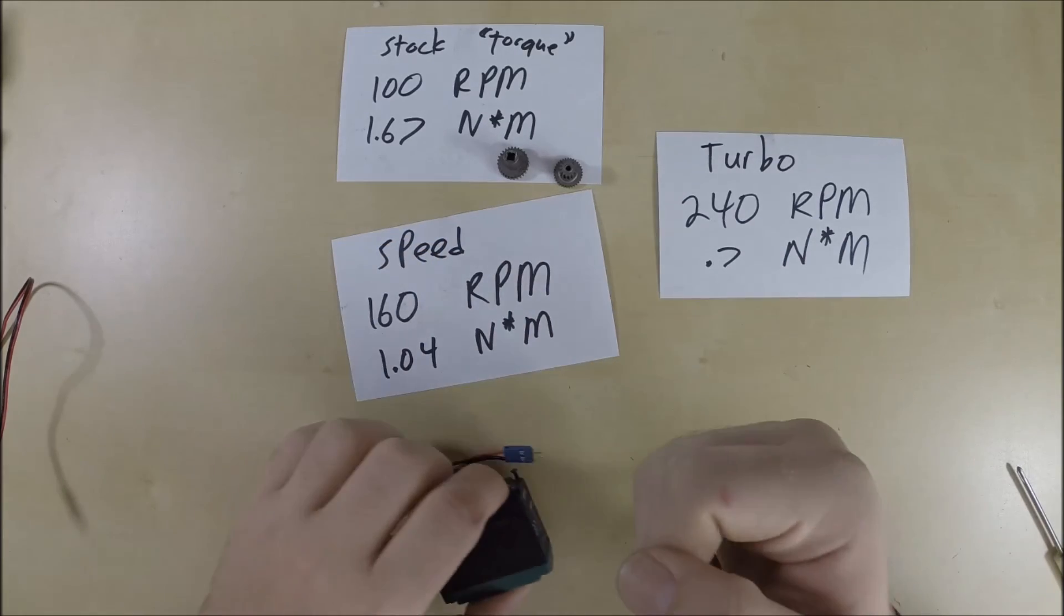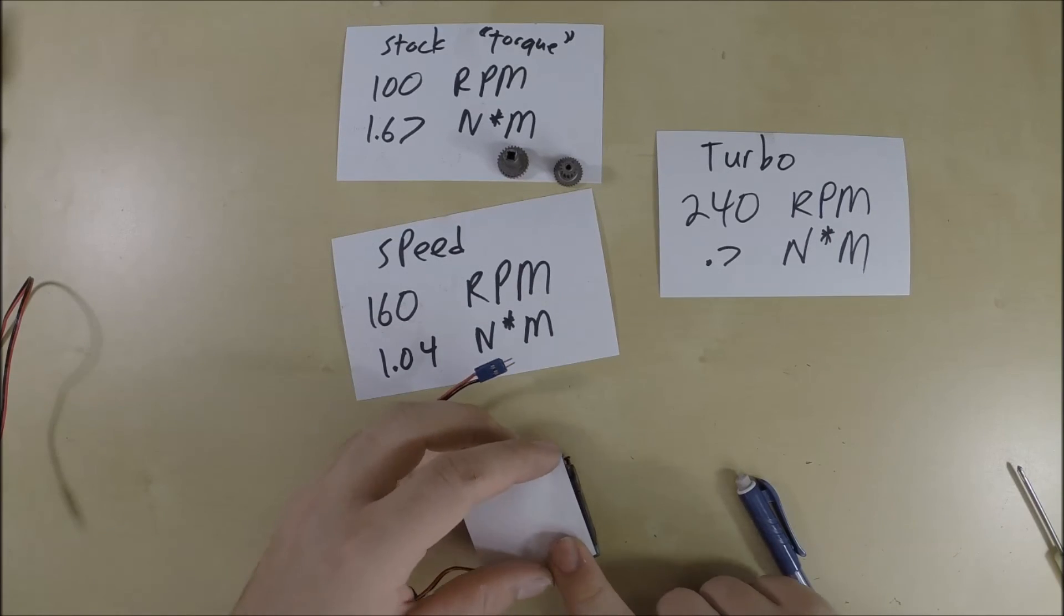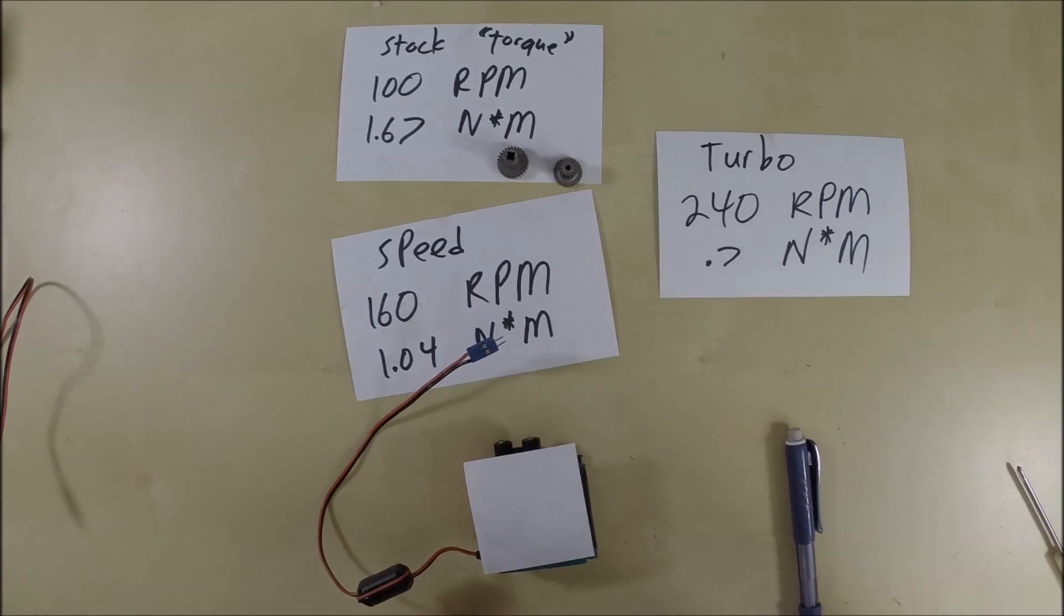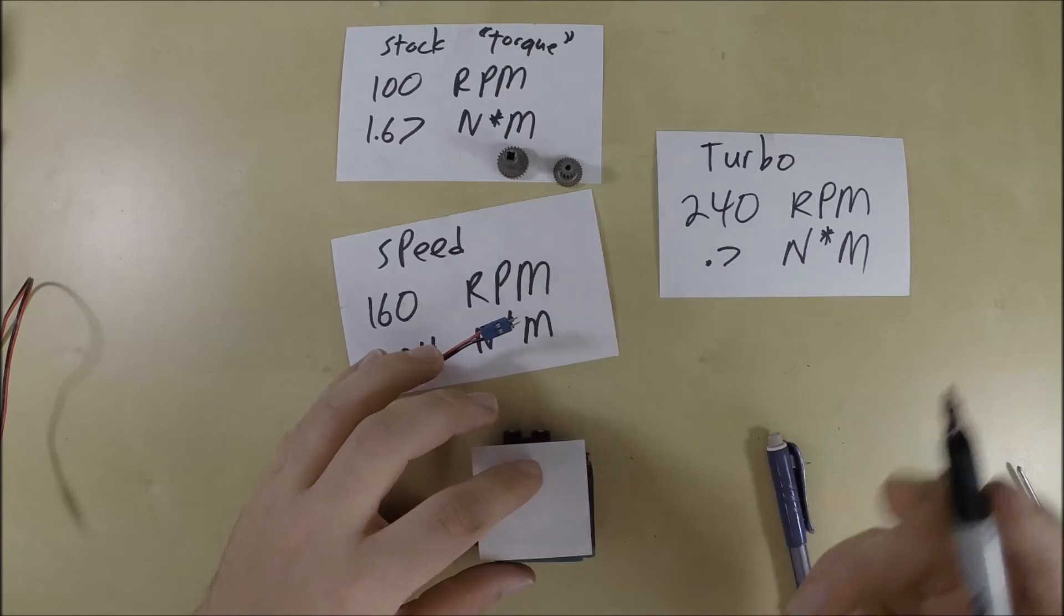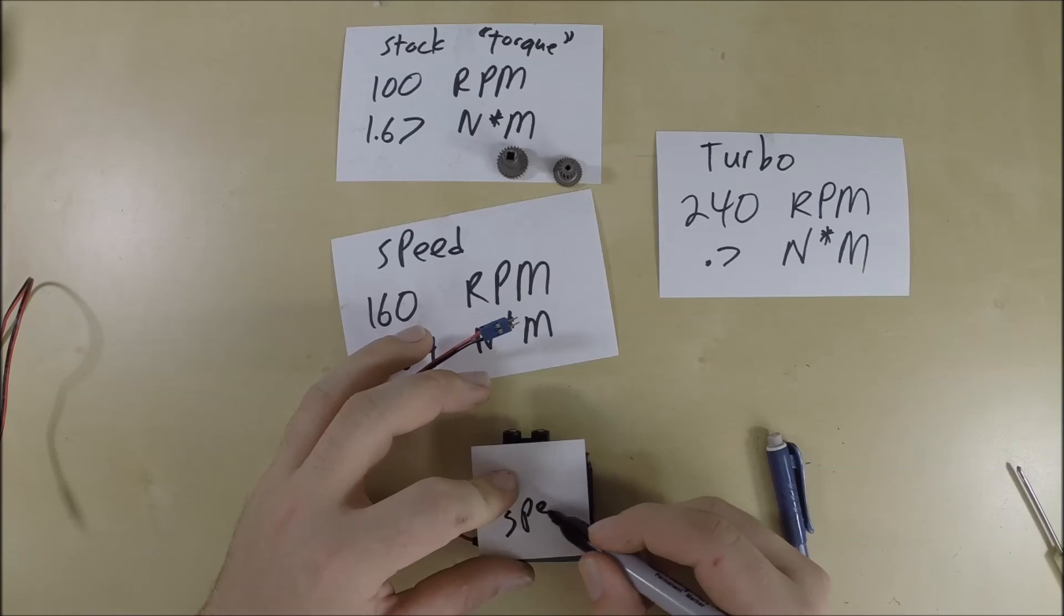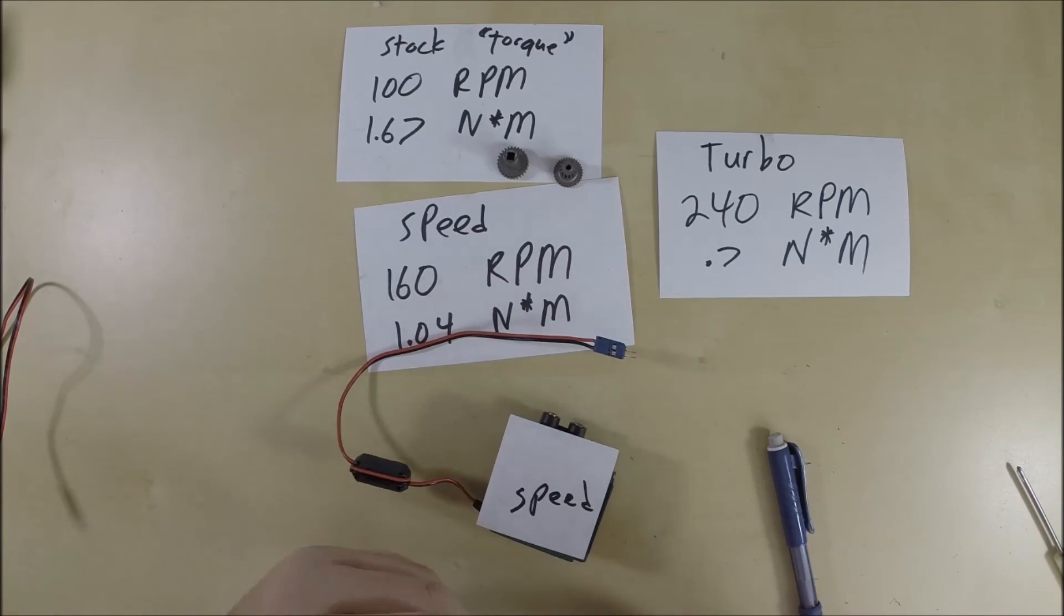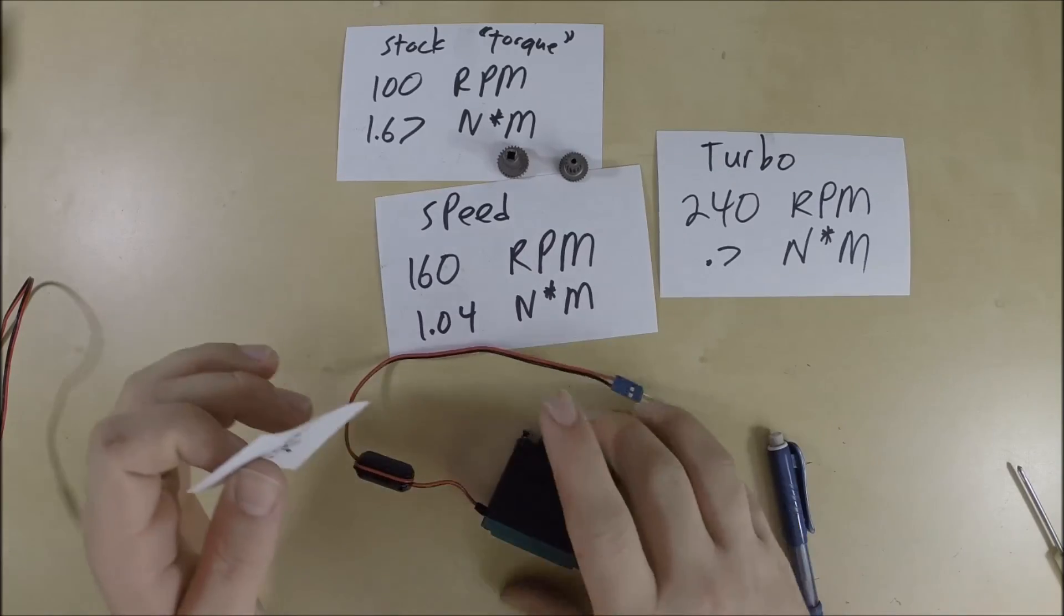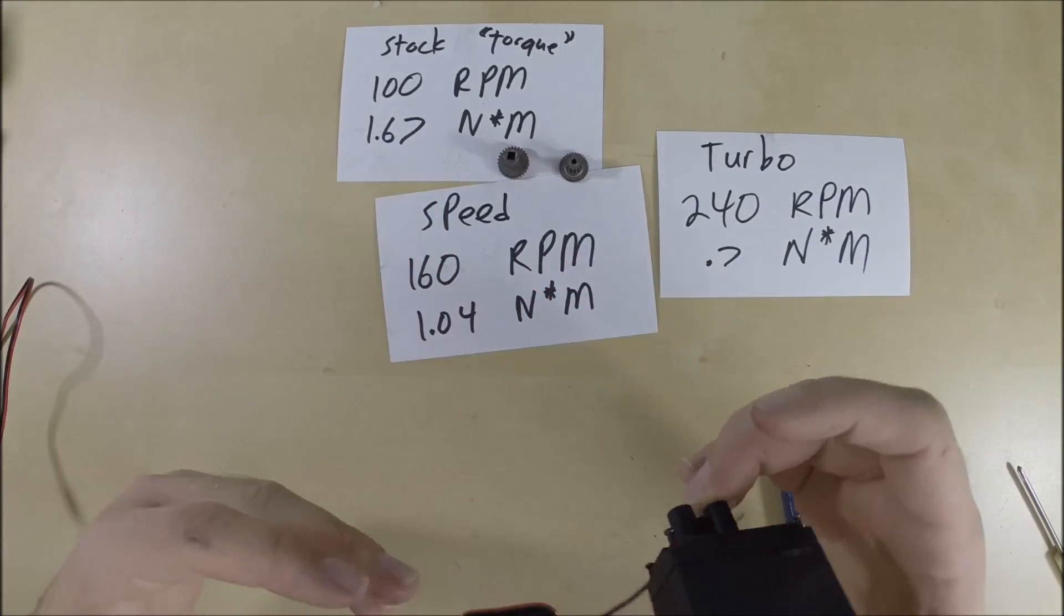And you're done. And one nice thing to do is just to help you remember and to help other people remember, get like a piece of tape or a sticky or something. Put it on there. And then write down if it's a speed, a torque, or a turbo. This one's speed. So I'll just like write speed on it or whatever. And that way you can tell what the motor is internally geared for before you put it on something.